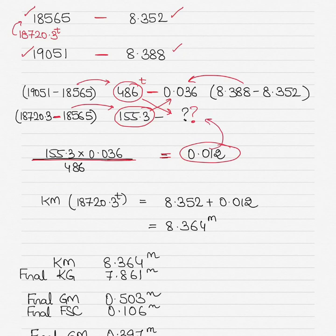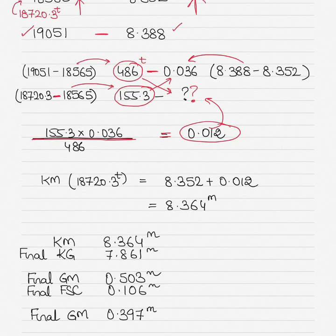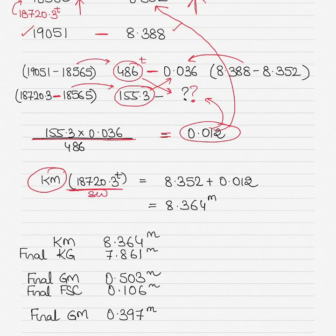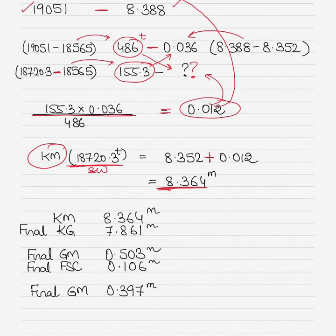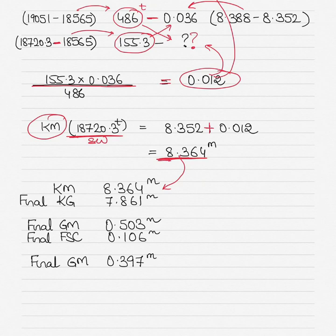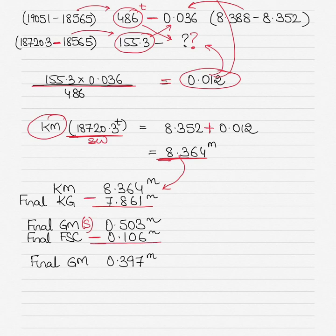As displacement increases, KM also increases, so you add the correction: KM = 8.352 + 0.012 = 8.364 meters. KG is always subtracted from KM to find GM solid: 8.364 − 7.861 = 0.503 meters GM solid. Then subtract the free surface correction: 0.503 − 0.106 = 0.397 meters, giving a final GM fluid of 0.397 meters.